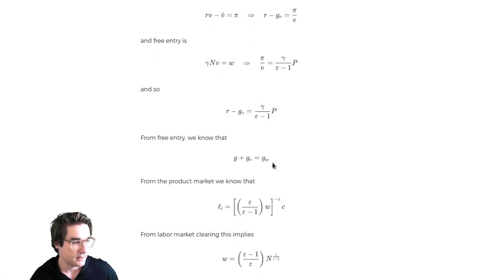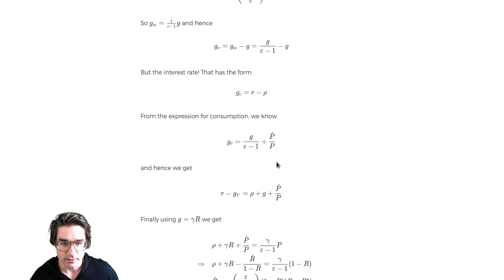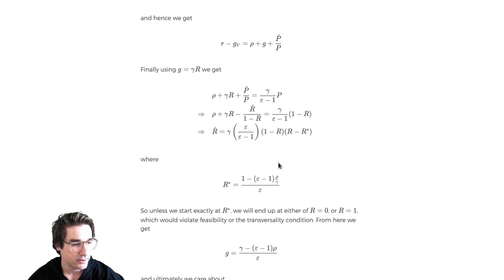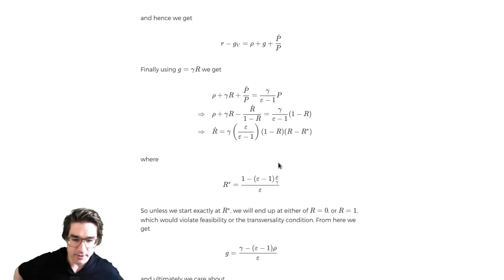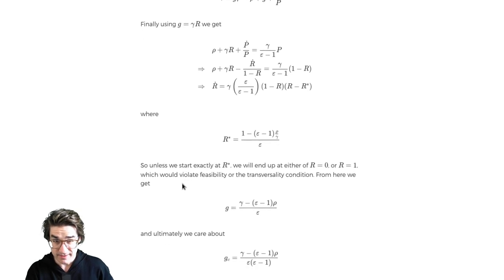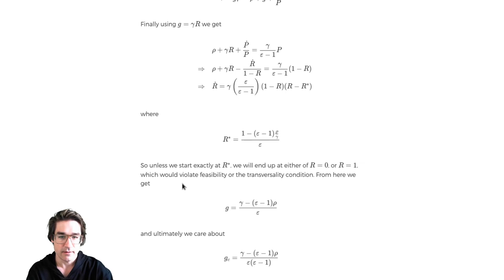Last time we were going through some stuff. We basically used that free entry condition, plugged in for what we knew about firm profits and firm value and the wage. It's really about congruency between wages and profits that's going to result in this equilibrium. We plugged in for all that stuff in a process similar to this, doing it the official way. We allowed for the possibility that R was changing over time or that the equilibrium itself was changing over time.